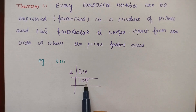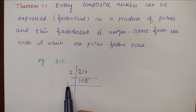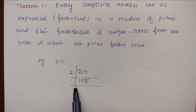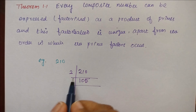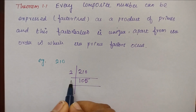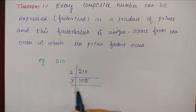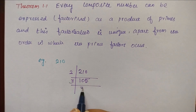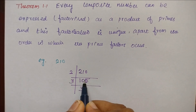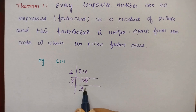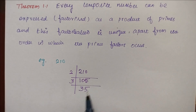Again, now we have 105. 5 is an odd number — it cannot be divided by 2. So let's try dividing by 3. 3 times 3 is 9, remaining 1, bring down 5 — 3 times 5 is 15, giving 35.